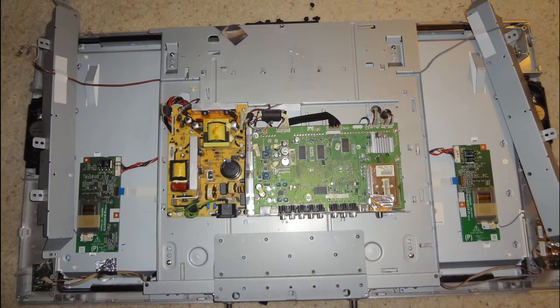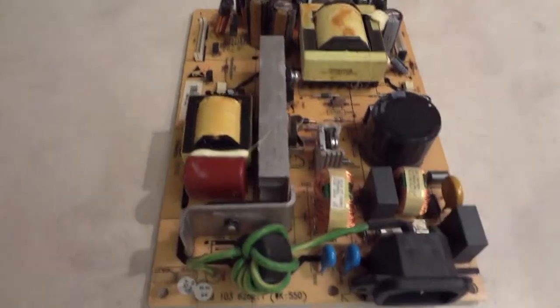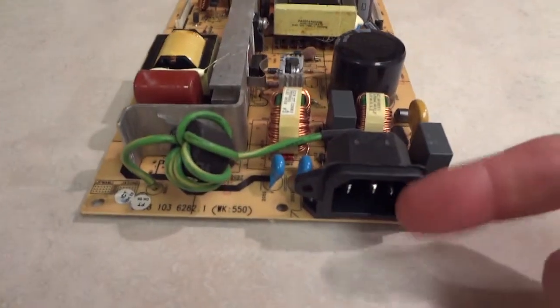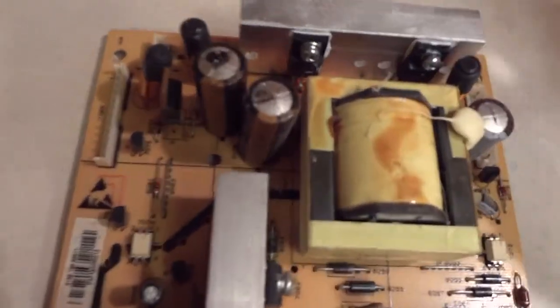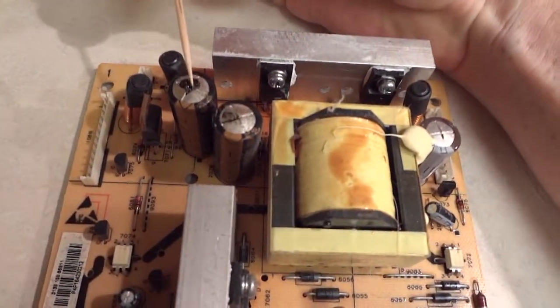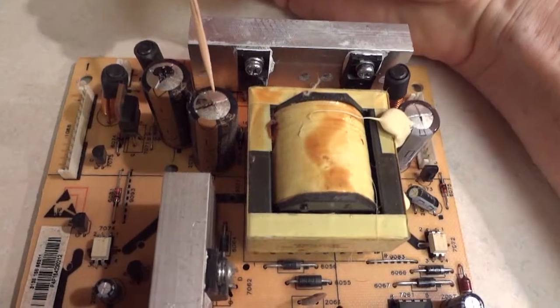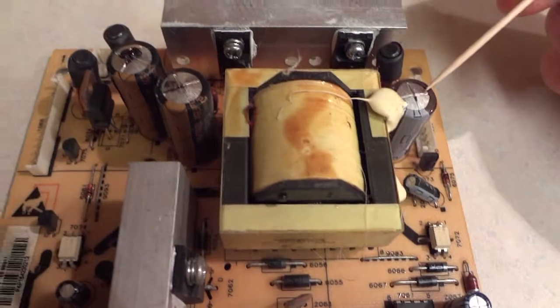The problem we're running into is right here. This is the circuit board for the power supply. Now as you can see, this capacitor, this capacitor, and it's harder to see but this capacitor right here are all blown out.